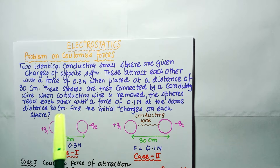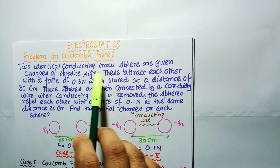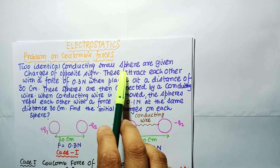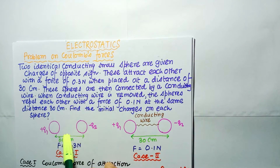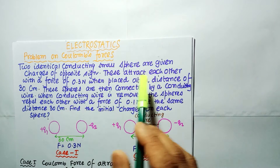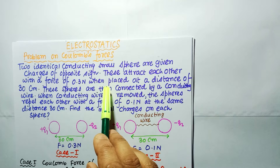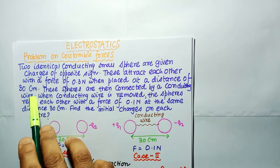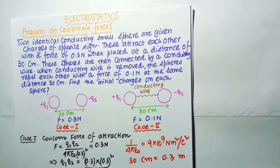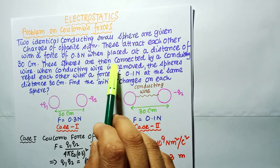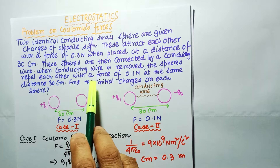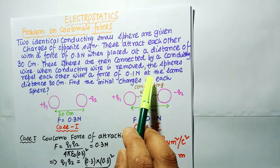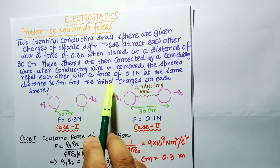We'll start with the problem on Coulomb forces. Our first problem: two identical conducting small spheres are given charges of opposite sign — q1 and minus q2. These attract each other with a force of 0.3 Newton when placed at a distance of 30 cm, which equals 0.3 meter. The spheres are then connected by a conducting wire. When the wire is removed, the spheres repel each other with a force of 0.1 Newton at the same distance of 30 cm. Find the initial charges on each sphere.